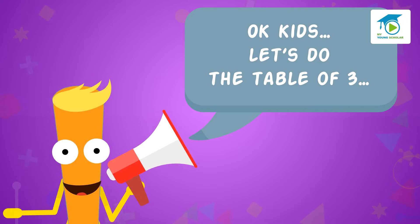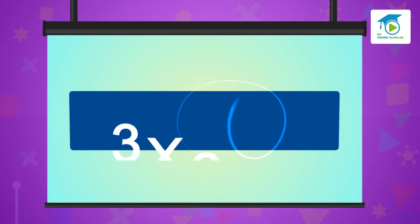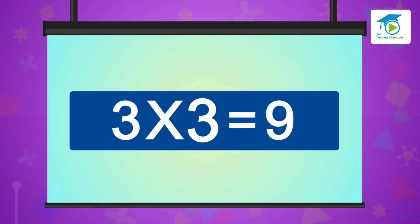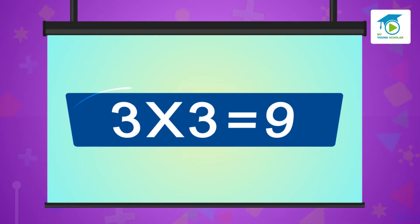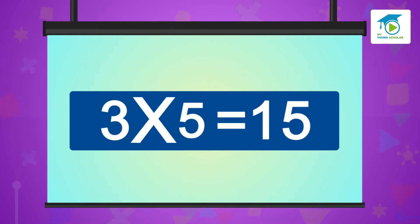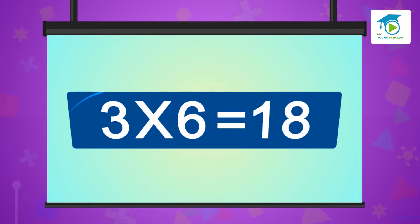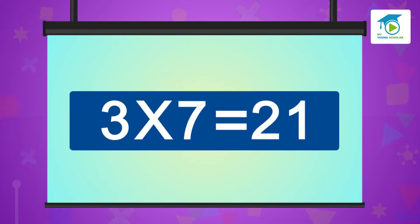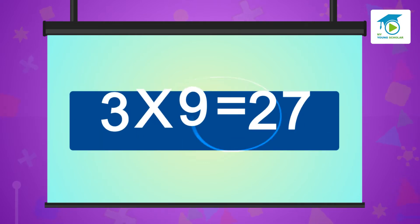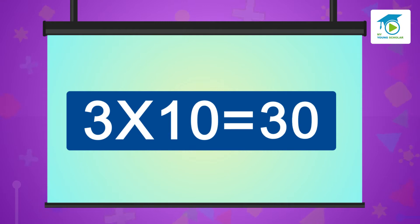Okay kids, let's do the Table of Three. Three ones are three, three twos are six, three threes are nine, three fours are twelve, three fives are fifteen, three sixes are eighteen, three sevens are twenty-one, three eights are twenty-four, three nines are twenty-seven, three tens are thirty.